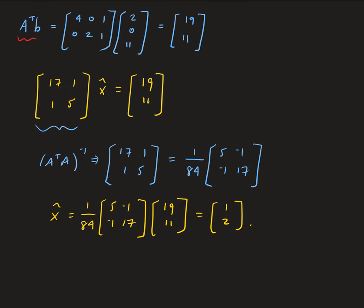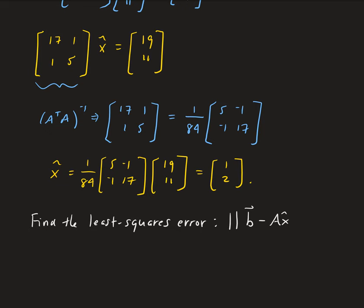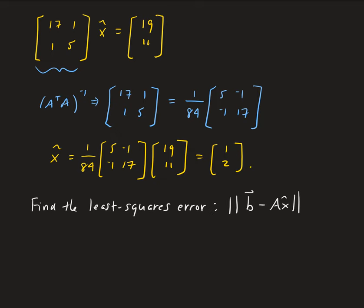That is our least squares solution. Now let's calculate the least squares error. The least squares error is the distance between the vector B and AX hat — we take the norm, the length of this vector. If you remember from the previous videos, this is the Z component, which is in the orthogonal complement of the column space of A.